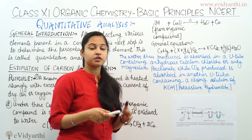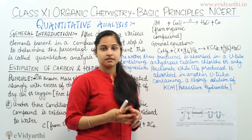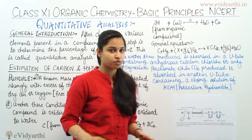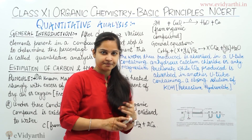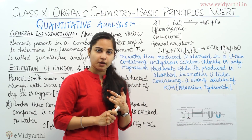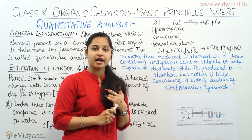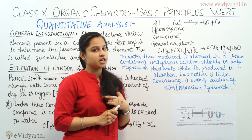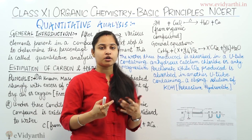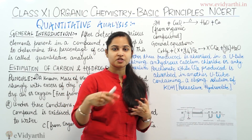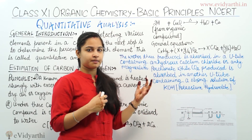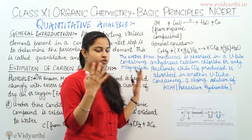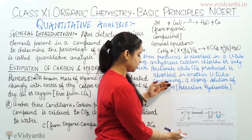I will now show you the images of the apparatus related to the estimation of carbon and hydrogen, so you get a clear picture of how we heat the sample with copper oxide in the presence of dry oxygen or dry air which is free from carbon dioxide, and how the carbon dioxide and water produced go into the U-tubes and are absorbed by the compounds present in those tubes.